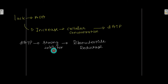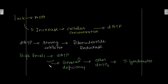dATP acts as a strong inhibitor of ribonucleotide reductase. High levels of dATP produce a general deficiency of other dNTPs in T lymphocytes.